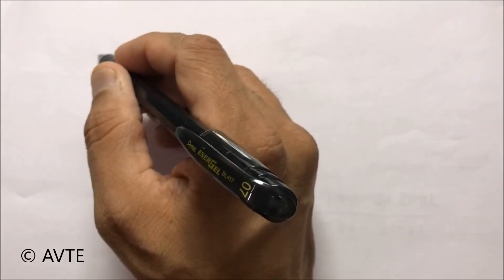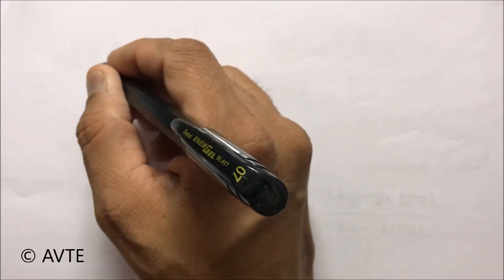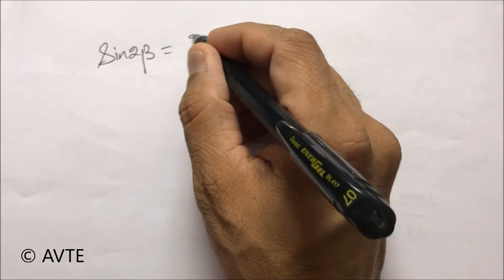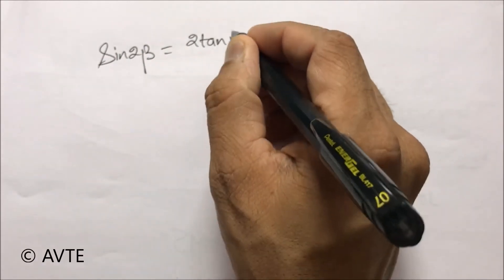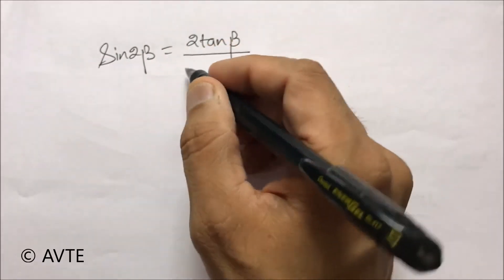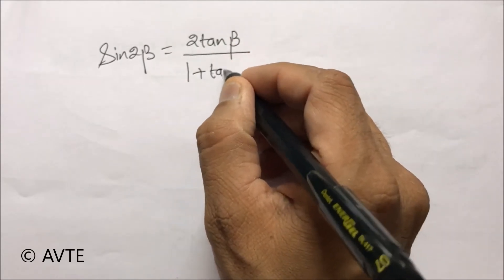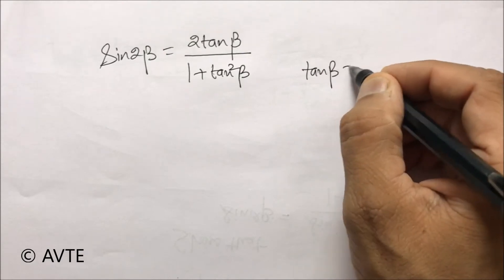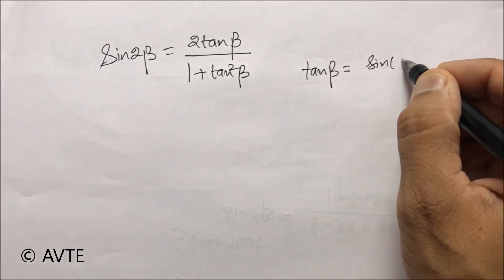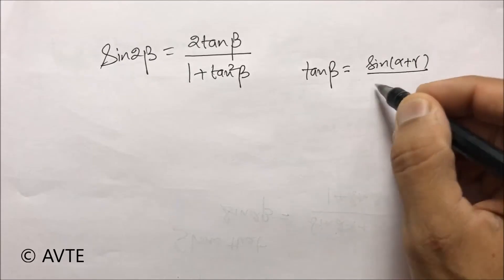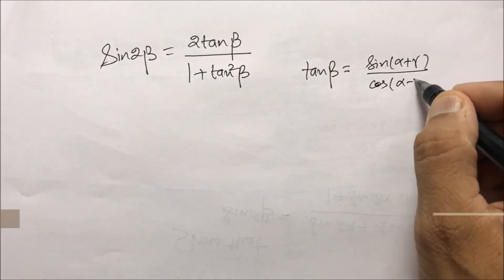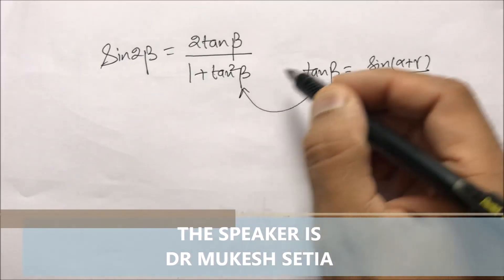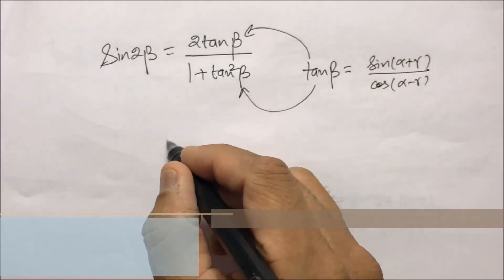Now we connect the multiple angle with tan β. sin 2β can be written as 2·tan β / (1 + tan²β). We can now substitute the value of tan β — which is sin(α + γ) / cos(α − γ) — into this double angle formula, placing it in both the numerator and the denominator.